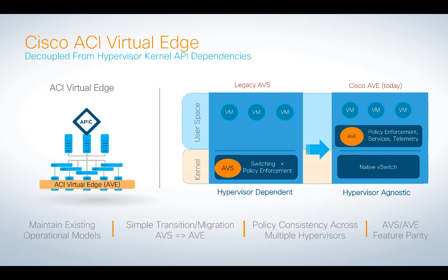That's no longer a problem because now we have something called Cisco AVE — ACI Virtual Edge. It's simply an evolution of the capabilities and feature sets of AVS, but no longer tied to the ESX kernel. We can do all of those same kinds of things and not have to worry about what decisions VMware might make about the technology that they own.